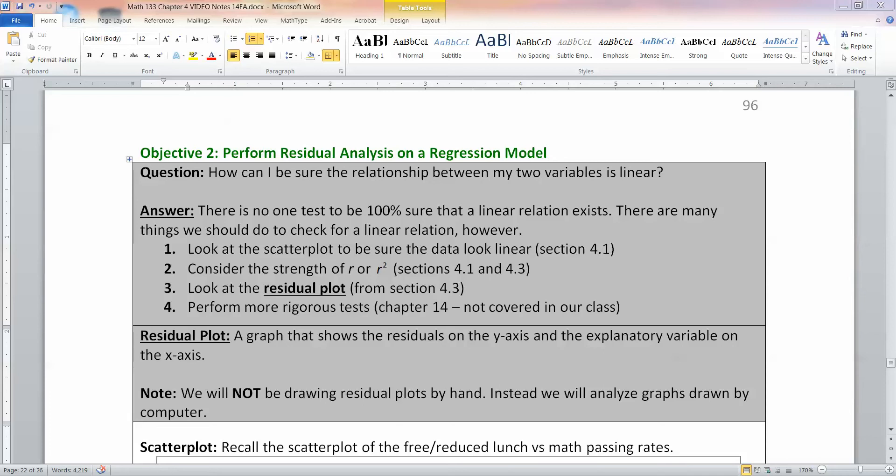So looking at our data set, we've looked at scatter plots, just to gauge whether it's linear just by visually checking the scatter plot. Does it look linear? Then we've looked at both r and r squared.